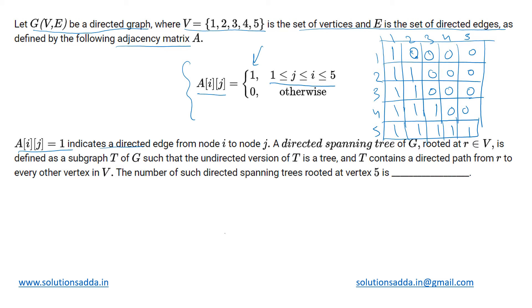For this graph, A[i][j] = 1 indicates a directed edge from node i to node j. They have defined a directed spanning tree for this graph. For any root r which is among the vertex set, if it is taken as a subgraph T of G...